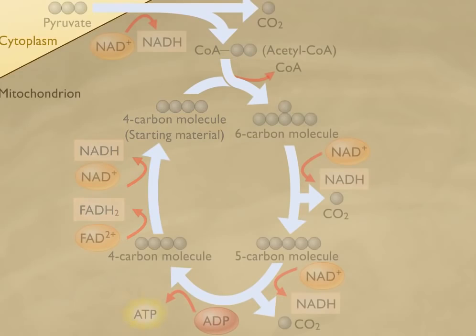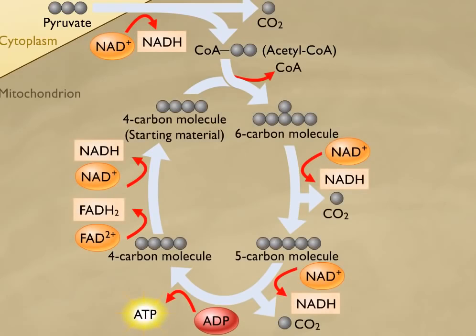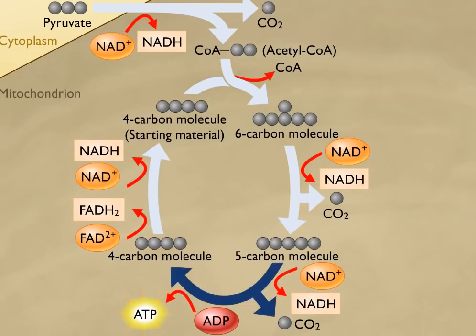Each glucose molecule is broken down into two pyruvate molecules during glycolysis. Then, each pyruvate is converted to acetyl-CoA, which enters the Krebs cycle. Thus, for each glucose molecule, the Krebs cycle must complete two circuits to completely break down the two pyruvate molecules.